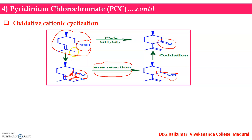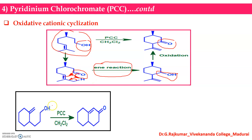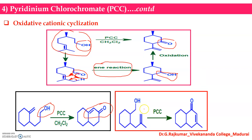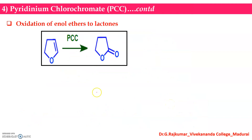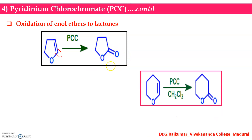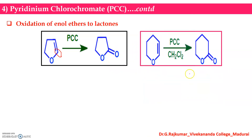Similarly, a primary hydroxyl group can be oxidized to an aldehyde and an ene reaction can give the cyclized product. You can also get alpha-beta unsaturated carbonyl compound as the product. For oxidation of enol ethers, the relevant position can be oxidized into a ketone group — that is a lactone, a cyclic ester — giving a six-membered ring lactone as a product in the presence of PCC and DCM.